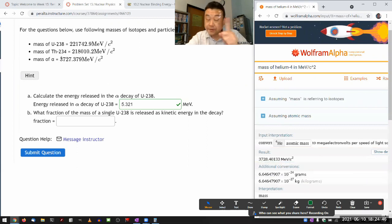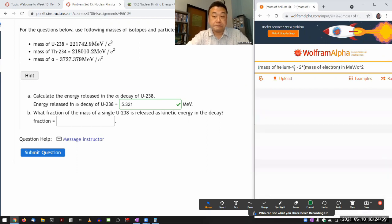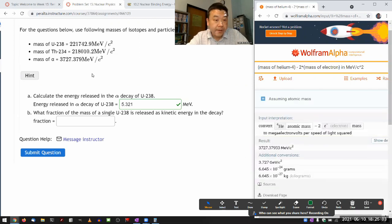Yeah, the number I have there is the alpha particle, not helium-4. Because you have to take this and subtract twice the mass of electron to get actual alpha particle mass.